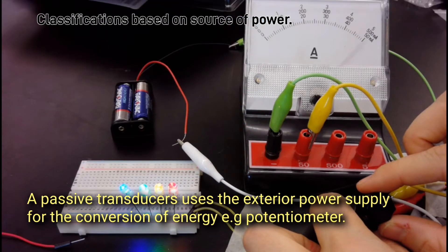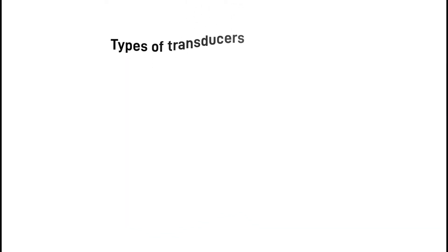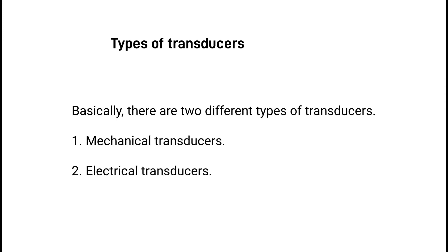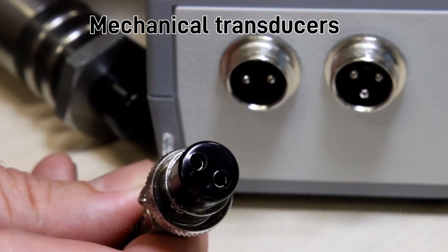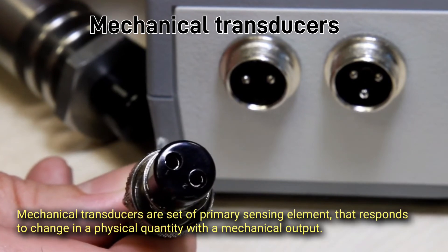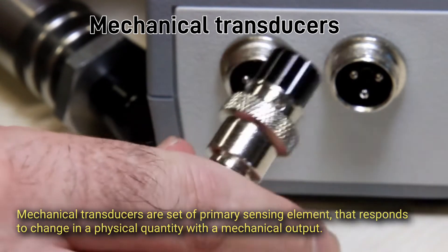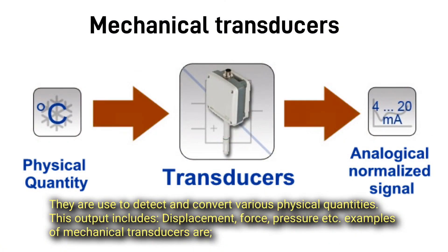A passive transducer uses an external power supply for the conversion of energy — for example, a potentiometer. There are basically two different types of transducers: mechanical transducers and electrical transducers. Mechanical transducers are a set of primary sensing elements that respond to changes in a physical quantity with a mechanical output.